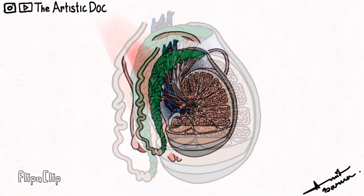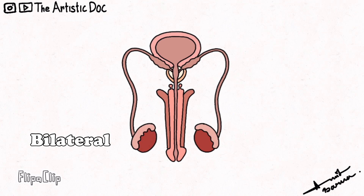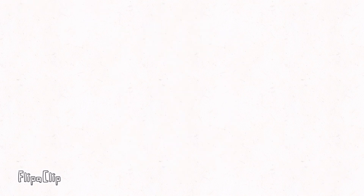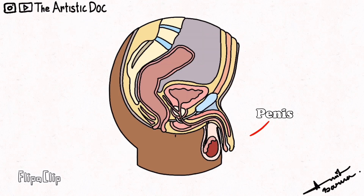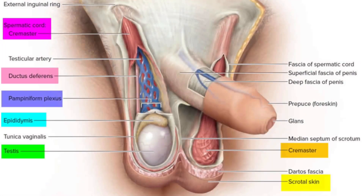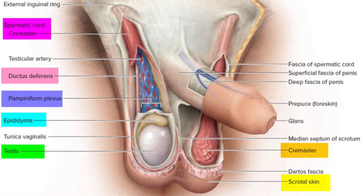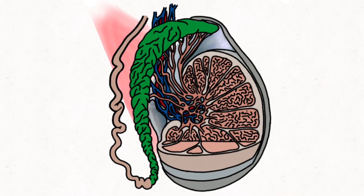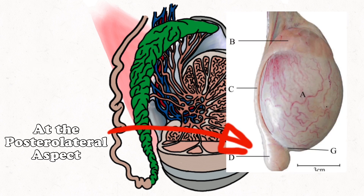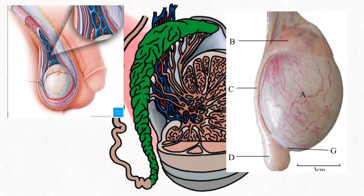Normally, the testes look like this. They are bilateral in nature and ovoid in shape, lying posterior to the penis and anterior to the anal orifice. The testicles are situated inside the scrotum, and the epididymis is situated on the posterolateral aspect of each testicle.